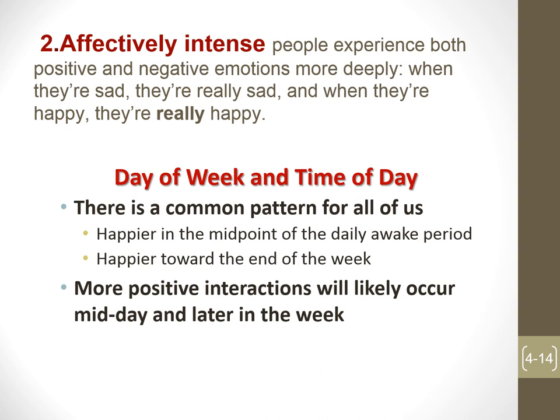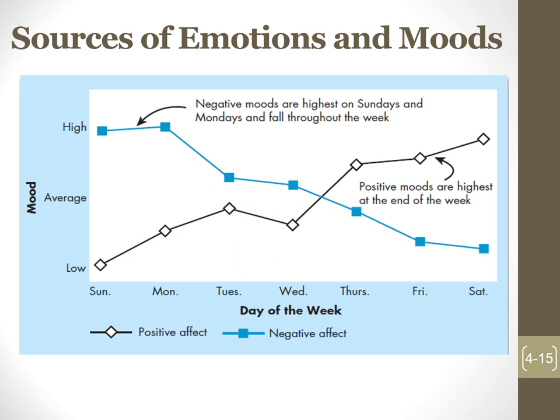The second source is day of the week and time of day. There is a common pattern: more positive interactions occur later in the day and later in the week. We start our week with a low positive mood, and by the end of the week it rises to a high positive mood. Similarly, we start Sunday and Monday with a high negative mood, ending the week with a low negative mood.